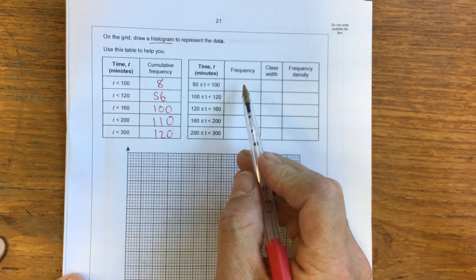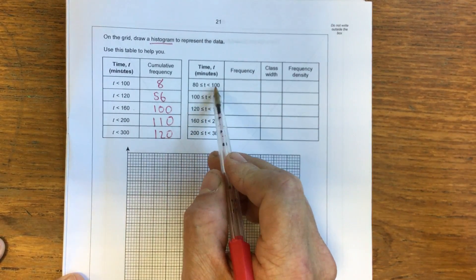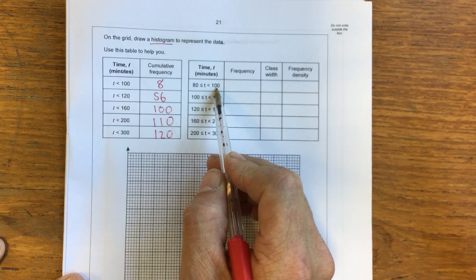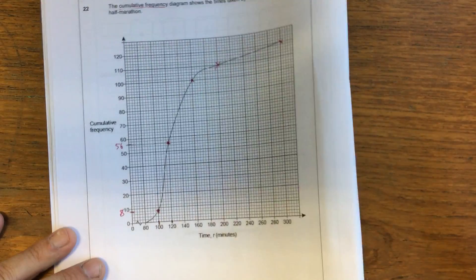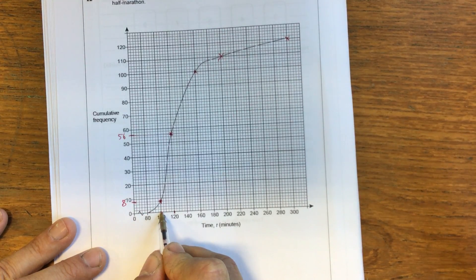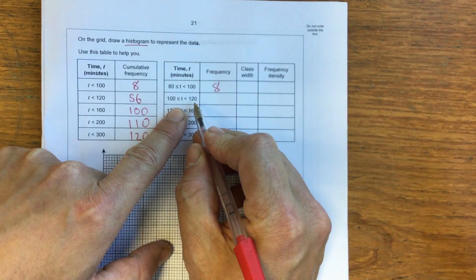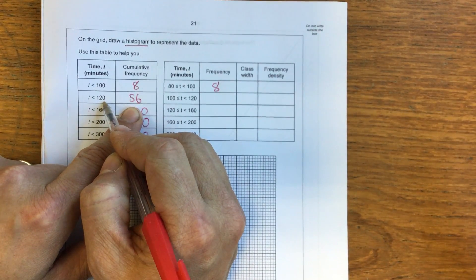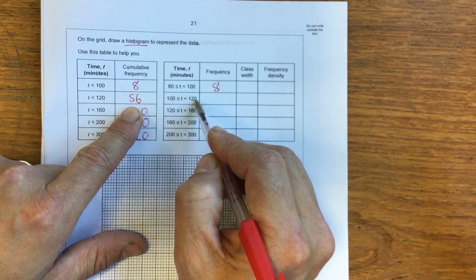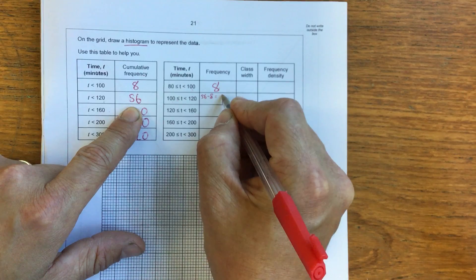Now in this table here, it asks you to calculate the frequency. Now the frequency is how many people completed the race with the time between 80 and 100 minutes. Between 80 and 100 minutes, if we look at our diagram here, no one completed the race less than 80 minutes. And by the time 100 minutes had finished, there were 8 people. So 8 was the frequency for that group. Now in the next section, we know that there were 56 completed by 120 minutes. But this includes these 8 people here. So if we limit it to just being between 100 and 120 minutes, it must be 56 minus 8, which would equal 48.